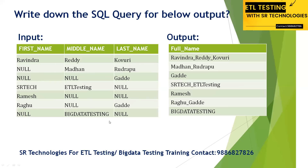The expected output: whenever you write the query, if all values are present, concatenate them with underscores — for example, 'Ravindra_Reddy_Kovari.' If a null value is present, ignore it — so the result would be 'Madhan_Rudrappu.' For the third row with two nulls, just output the single non-null value 'Gardha' with no underscores. For the fourth row, 'Aesthetic_ETL Testing' since the last name is null.